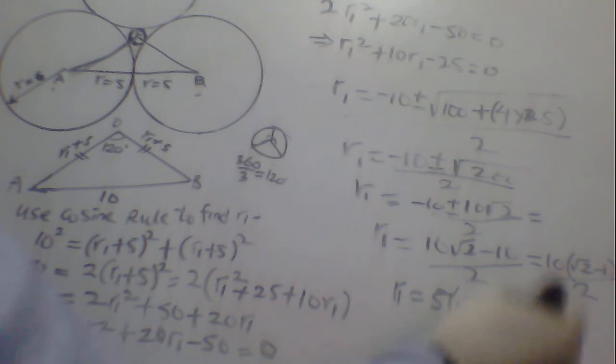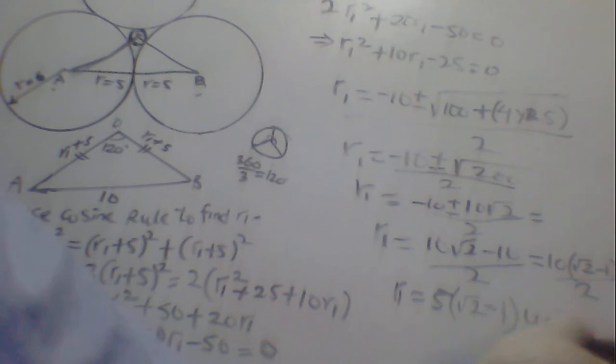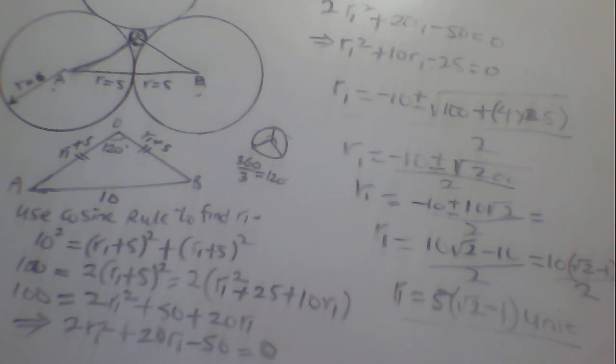So this is the answer — don't forget to include the unit. r1 = 5(√2 − 1) cm. That is what we were required to find. If you have any questions, feel free to ask. Don't forget to subscribe to the channel for more videos. See you in the next section — bye for now.